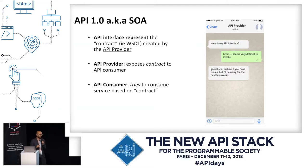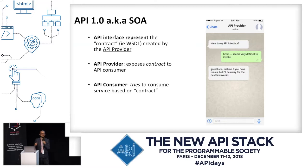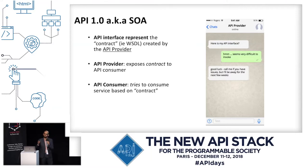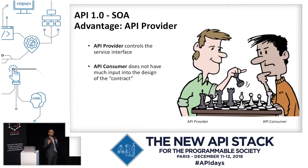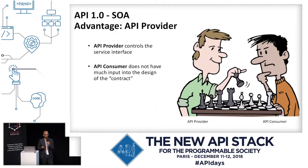What happened was that the API provider created the interface, and it was quite often very tied closely to the implementation. They just handed it over to the consumer and said, 'Just call my API — here's the contract. There's a WSDL-to-Java generation tool that'll create you a stub.' But for folks who've been around, it wasn't always the most trivial process. In API 1.0, it was really the provider driving things — the consumer was at the mercy of that contract.